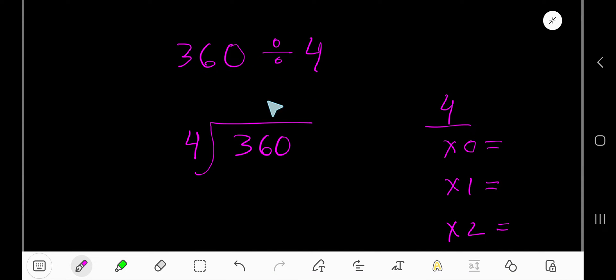360 divided by 4. 4 goes into 3 how many times? Actually, 3 is less than 4, so 0 times. Write 0. 0 times 4 equals 0. If you subtract, you will get 3.